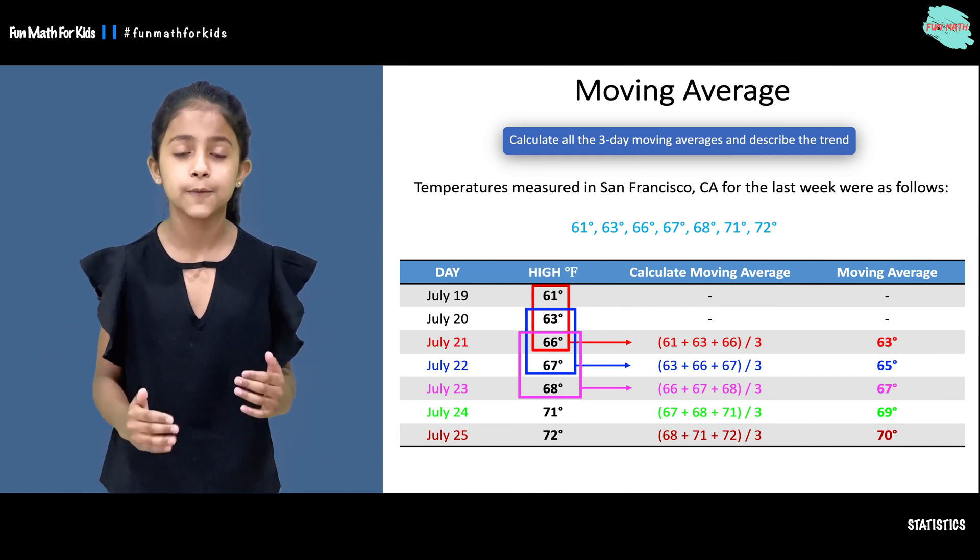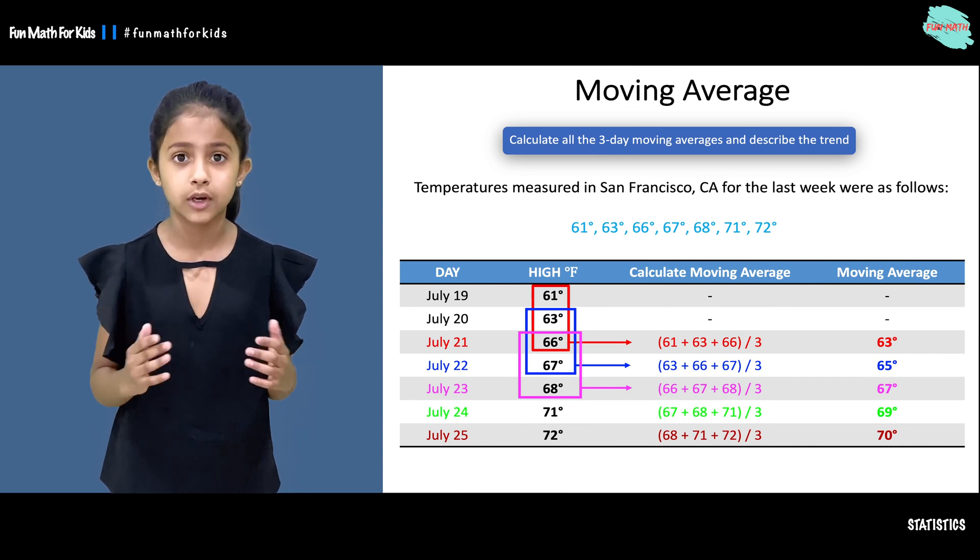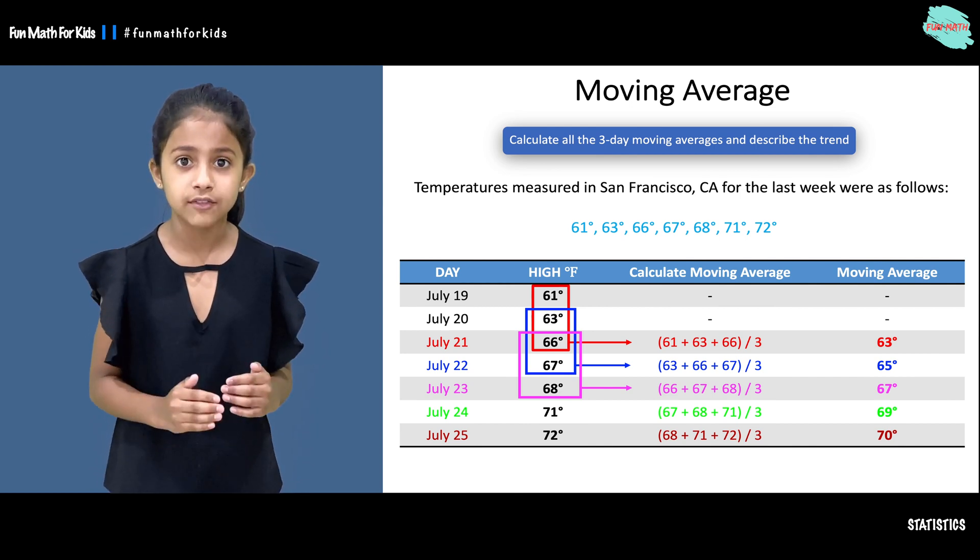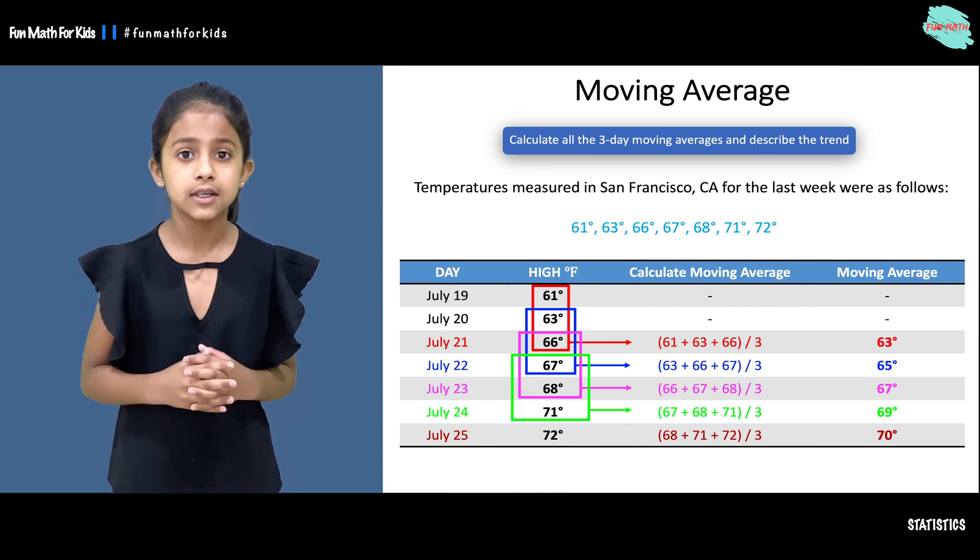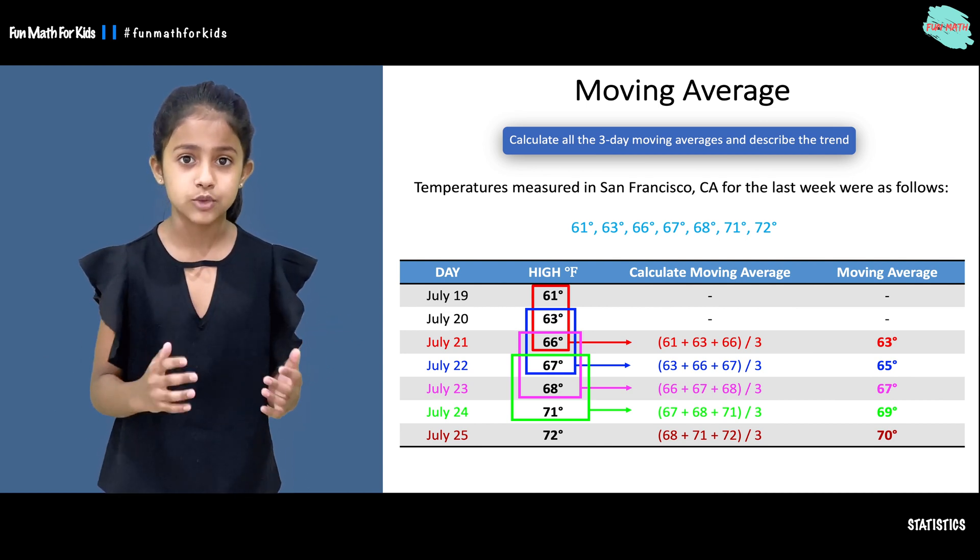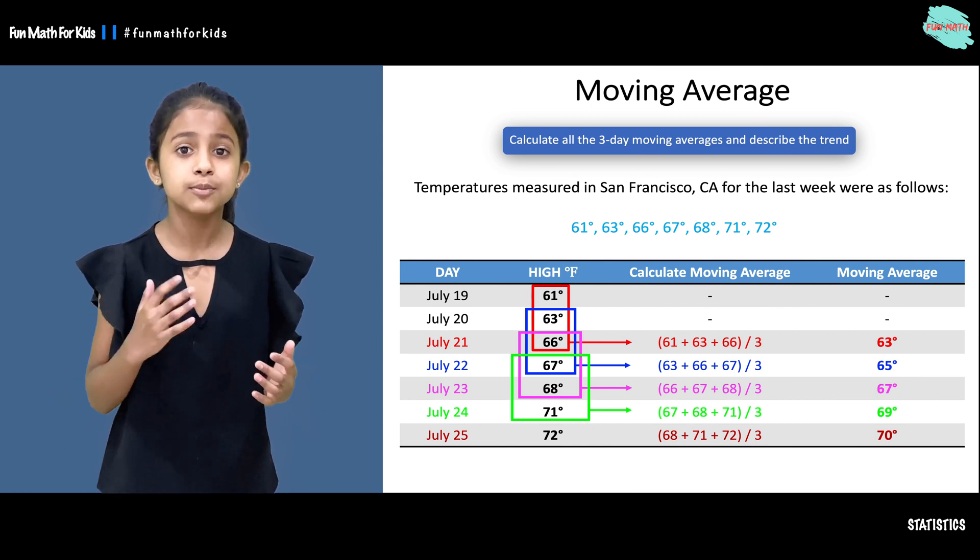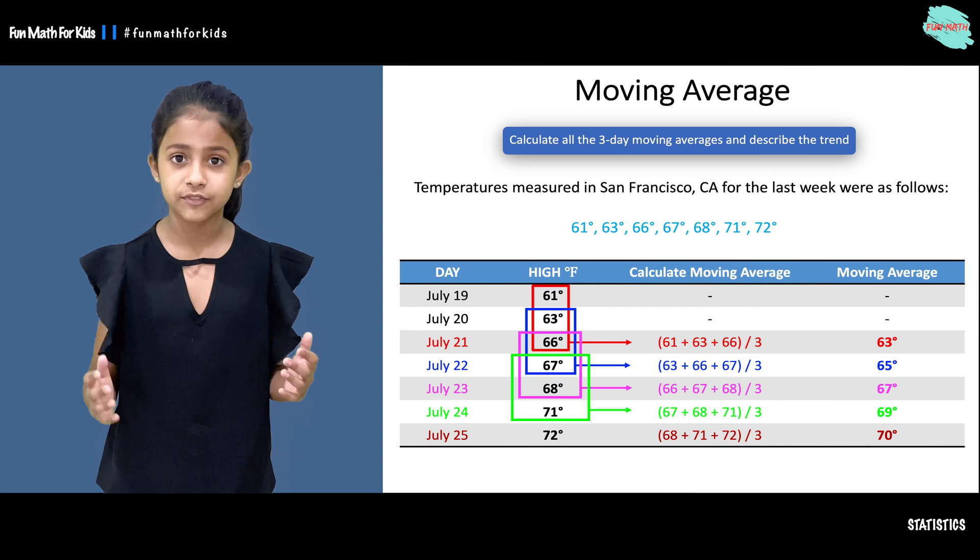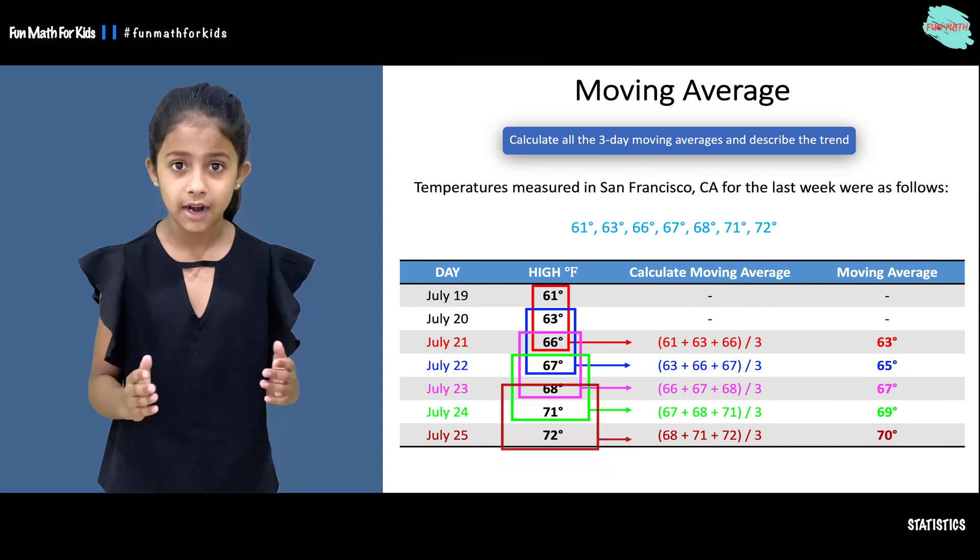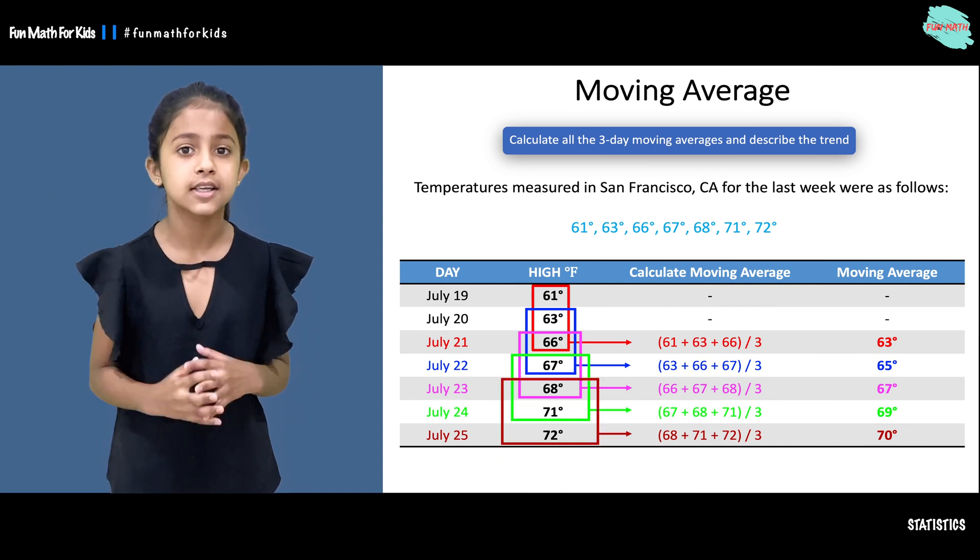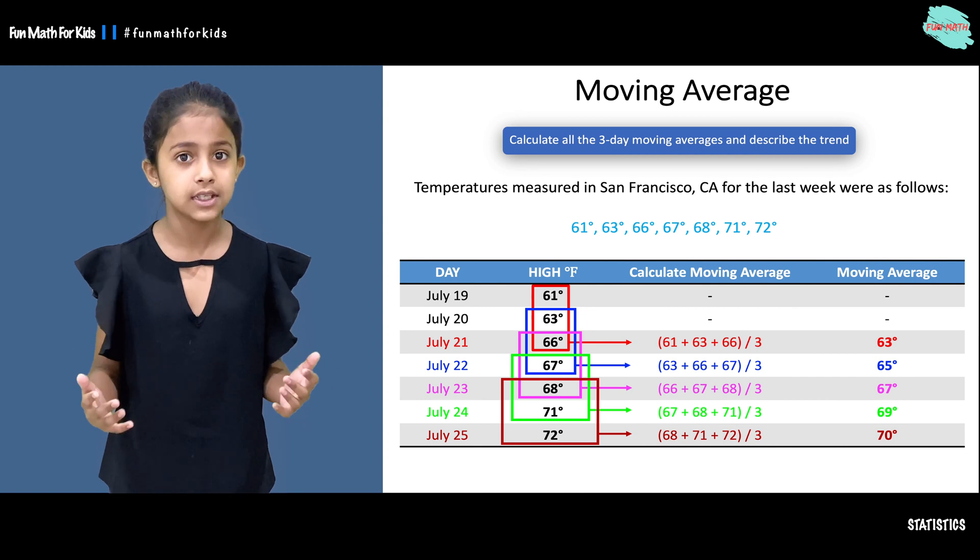Now let's move on to July 24th. We will find the average of the three previous days and we will get 69 as our moving average for July 24th. Last but not least, let's move on to July 25th. We will find the average of the three previous days and we will get 70 as our moving average for July 25th.